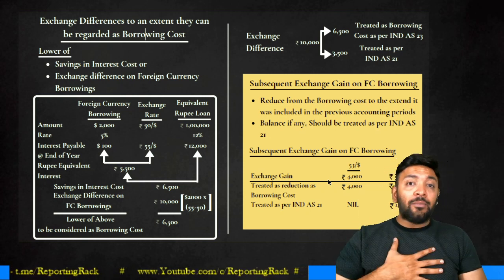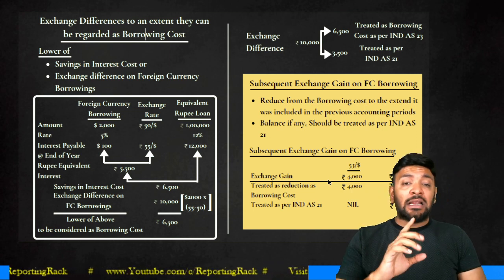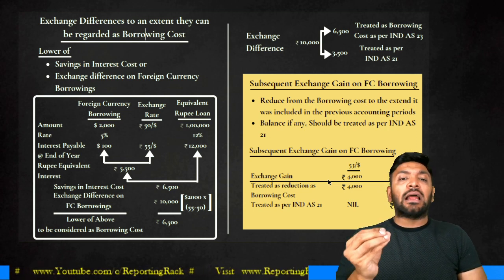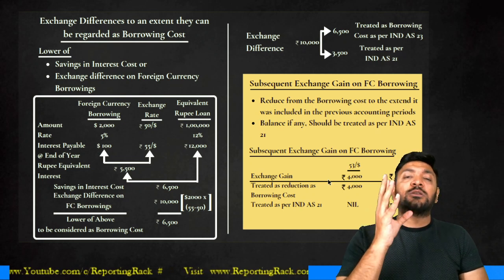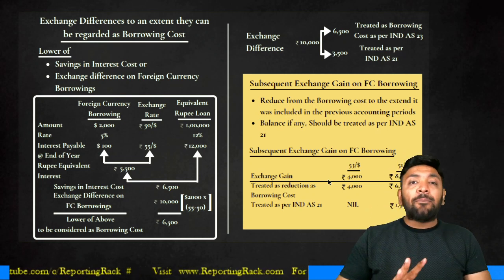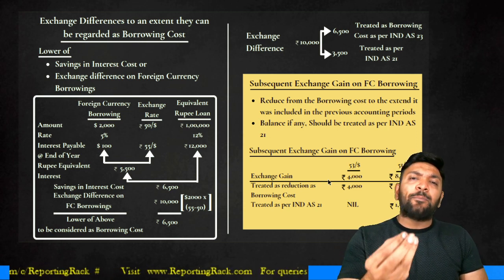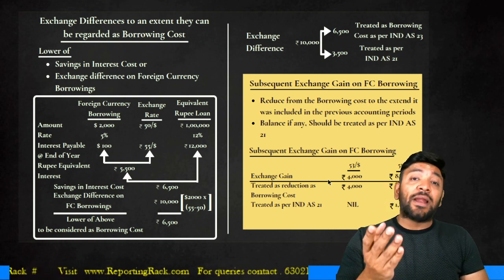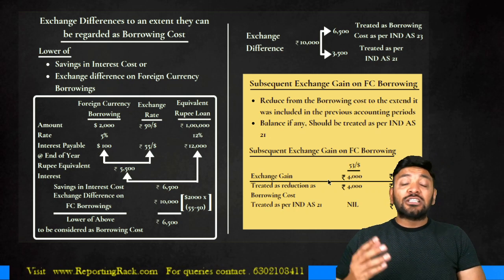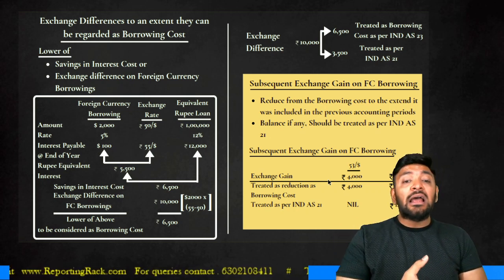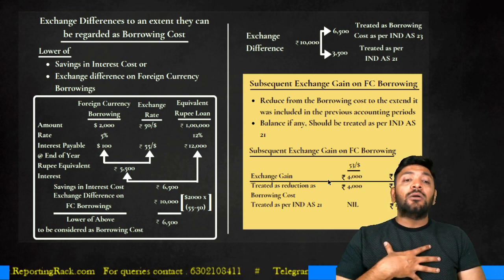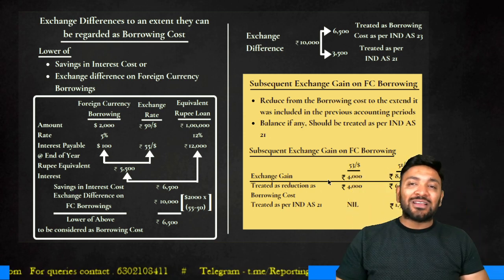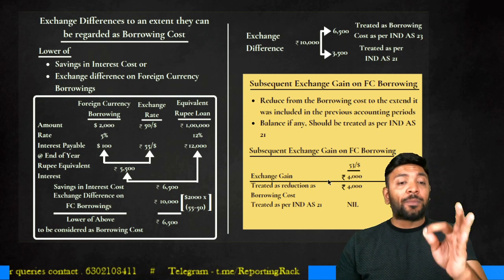Had I borrowed in India at 12%, I would have paid 12,000 rupees. But I paid $100 interest, and by the end of the year the exchange rate moved to 55 rupees per dollar. Even then I was happy — $100 at 55 rupees per dollar meant I paid only 5,500 rupees. Instead of 12,000, paying only 5,500 gave me a significant advantage. My savings were 12,000 minus 5,500 — I saved 6,500 rupees of interest.